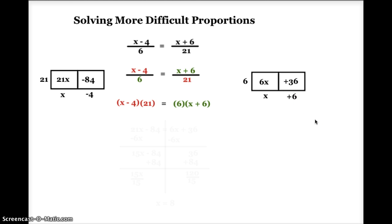Now I've got a new equation. I have 21x minus 84 is the same as 6x plus 36, and I've rewritten that right here. If you notice, this is just a two-step equation where I have variables on both sides of the equation.